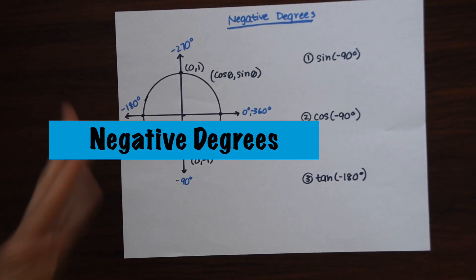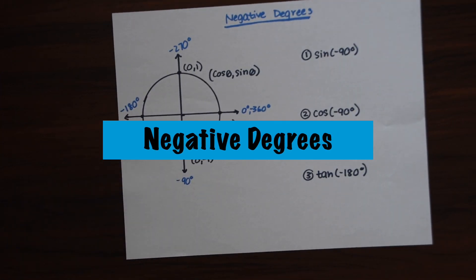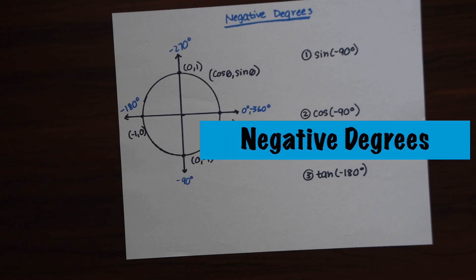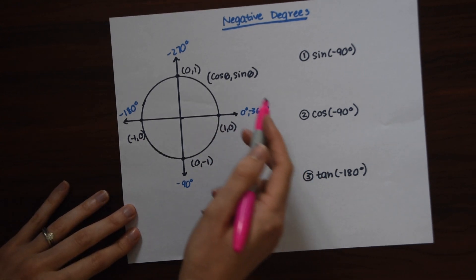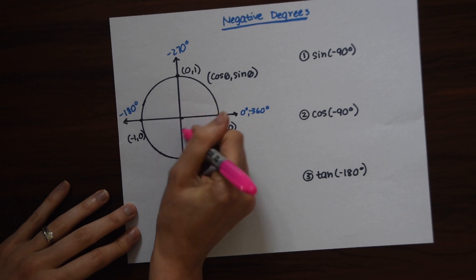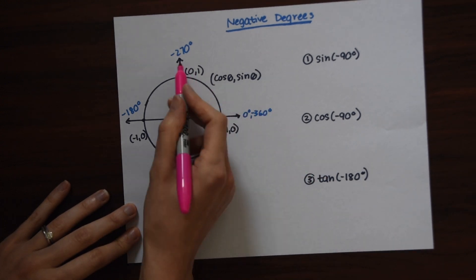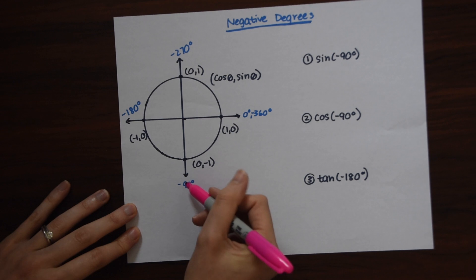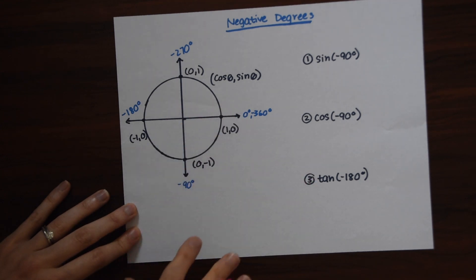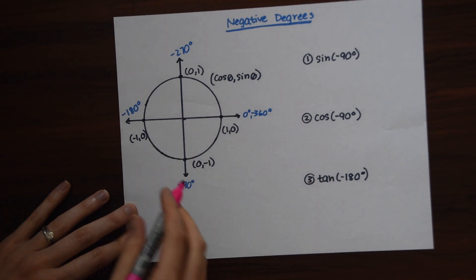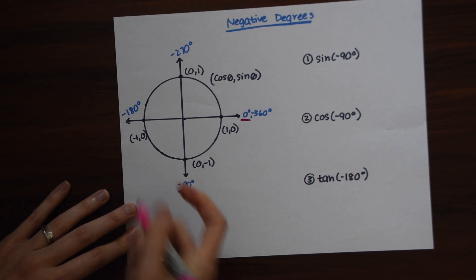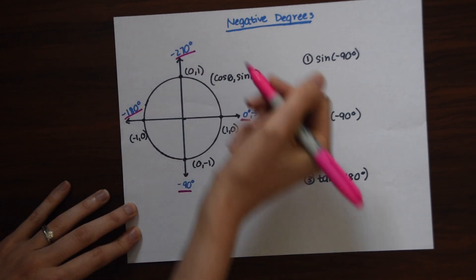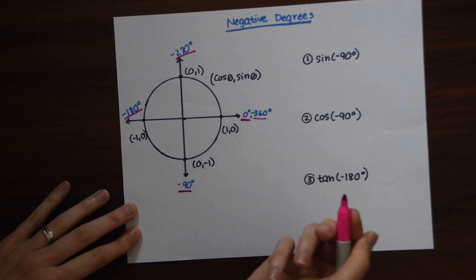Next, we're going to look at negative degree values. Negative degree values can also be found on the unit circle — you just have to know which way the degrees go. Before we were going counterclockwise: 0, 90, 180, 270. But with negative degrees, they actually travel a different way. Starting at 0, then coming down to negative 90, negative 180, negative 270, and back at negative 360.